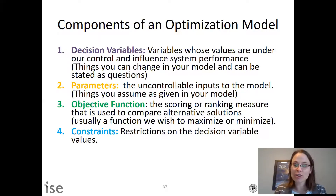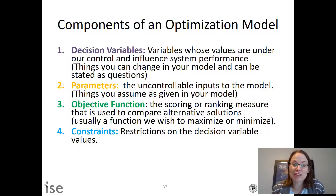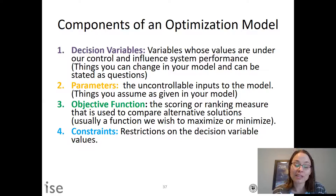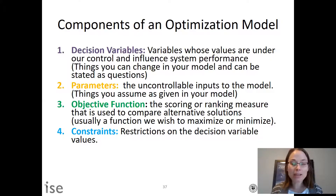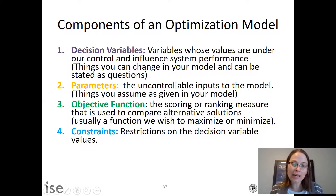Constraints are what restrict us. In aggregate planning problems, if your answer is all zeros, your constraints aren't right. A typical constraint is that we must meet demand each period — that forces the decision variables to be non-zero.